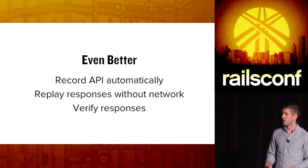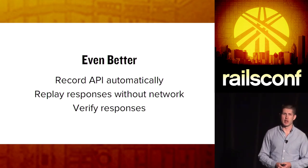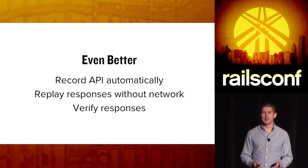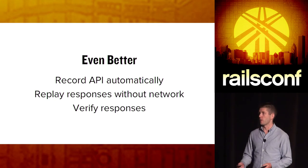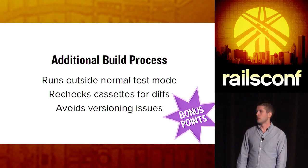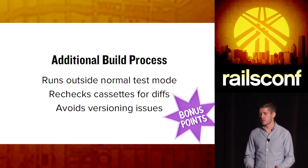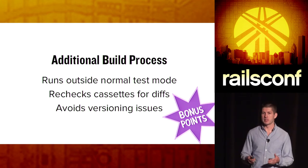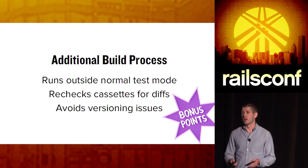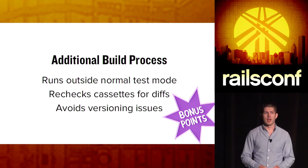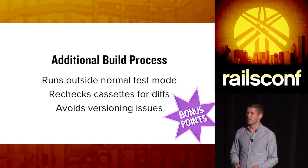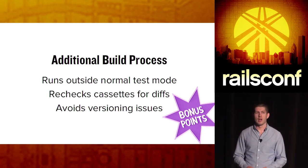VCR also allows you to verify the responses programmatically, rather than manually copying and pasting them. There's also an additional build process you can add — for the NHL example where there was no versioning, you can set up some kind of build process where you run it outside of your normal test mode and check the cassettes for diffs to verify that the responses haven't changed from before. This can help you avoid versioning issues, so I recommend that if you're using something like the NHL API.